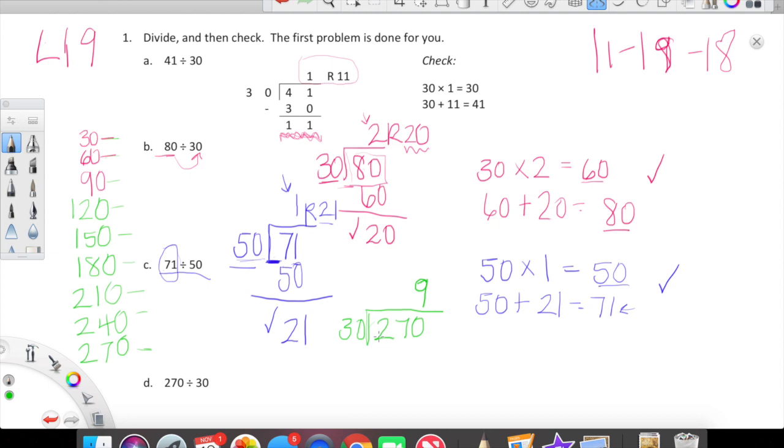So 270 divided by 30, it looks like we have one, two, three, four, five, six, seven, eight, nine 30s that go into 270. So I'm going to put that 9 right above the zero here, keeping things really well aligned. And that makes a lot of sense, because I know that 9 times 3 is 27, or 27 divided by 3 is 9. Of course, we have a different place value here. Now let's look at 9 times 30. Well, 9 times 3 is 27, but that's a 30, so it's actually 270.